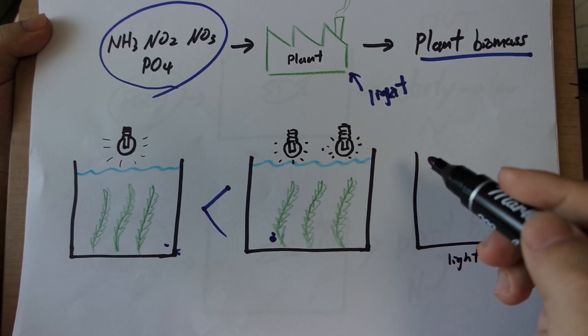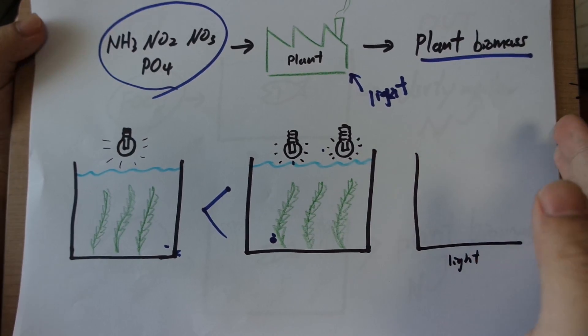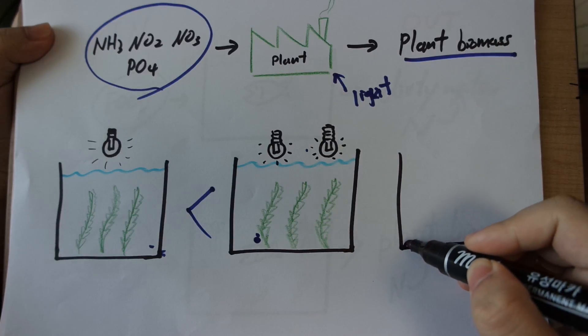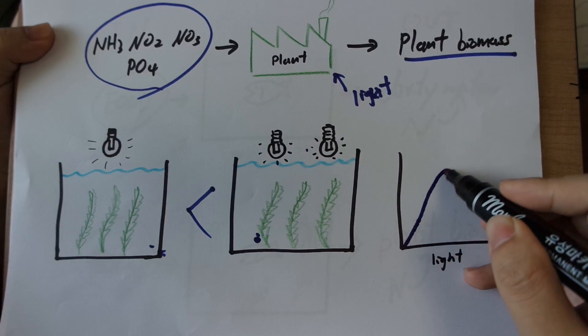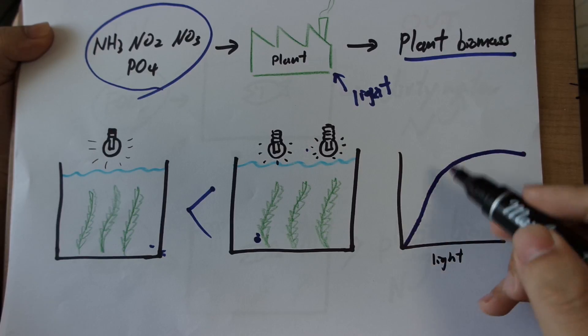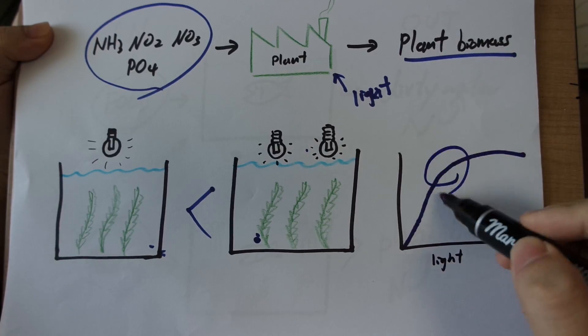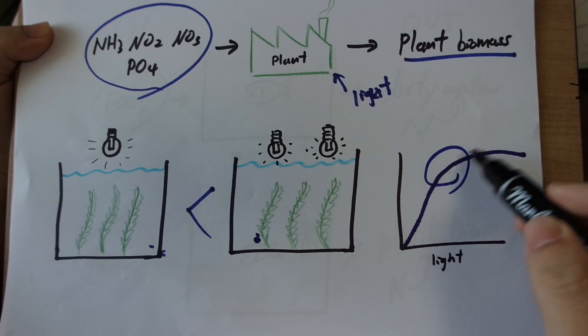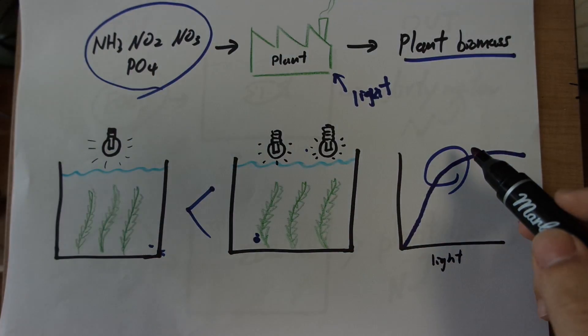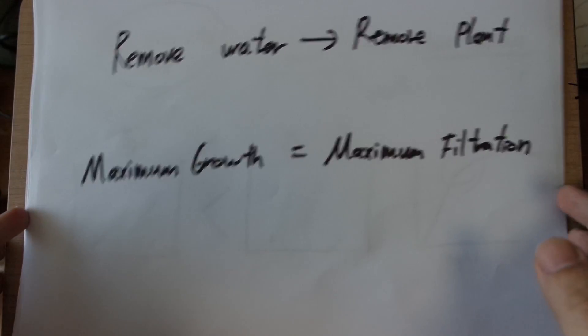Of course, there is a point where the light becomes redundant. So if you have no light, you're going to get zero filtration. The filtration is going to go up and up and up until it reaches a plateau where more light becomes irrelevant. So you're going to want to keep it somewhere in this maximum range of light to get the maximum amount of filtration for your tanks. So that is how much light you're going to need.